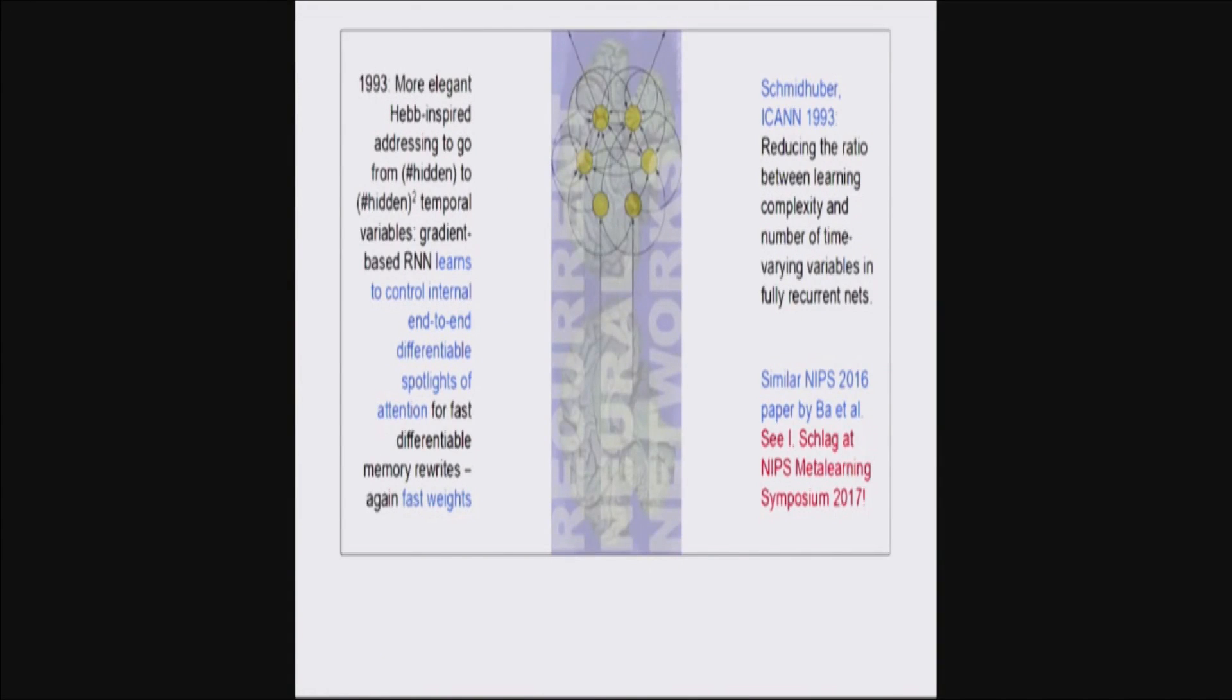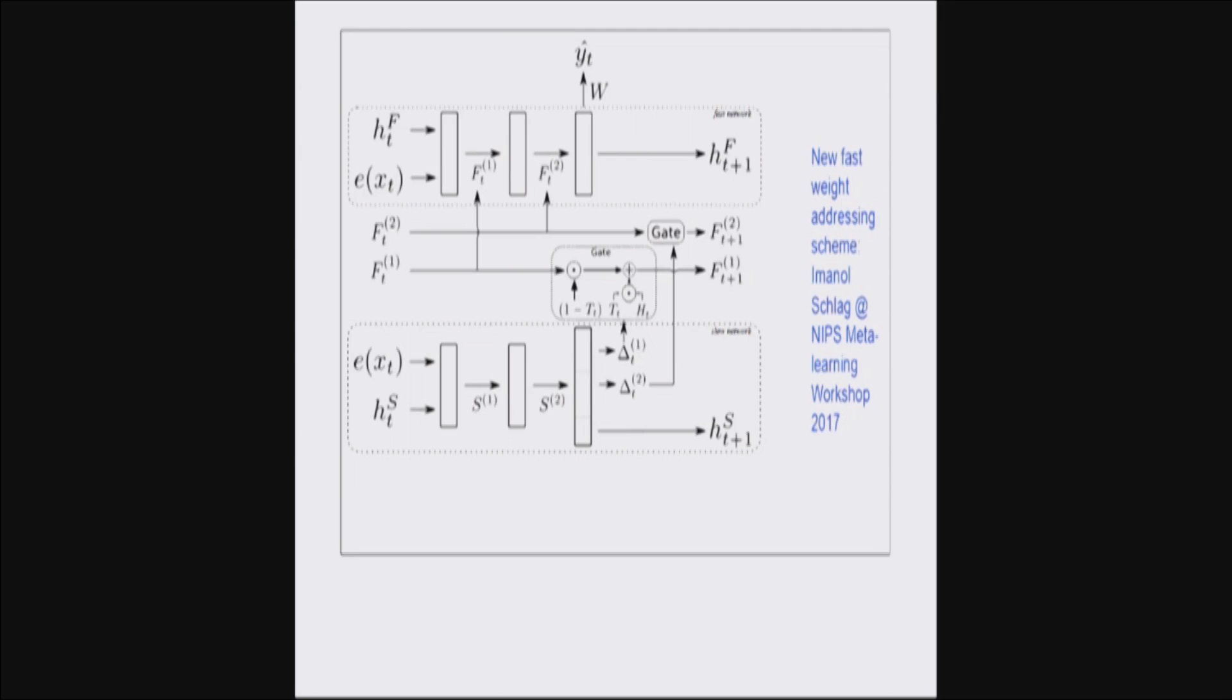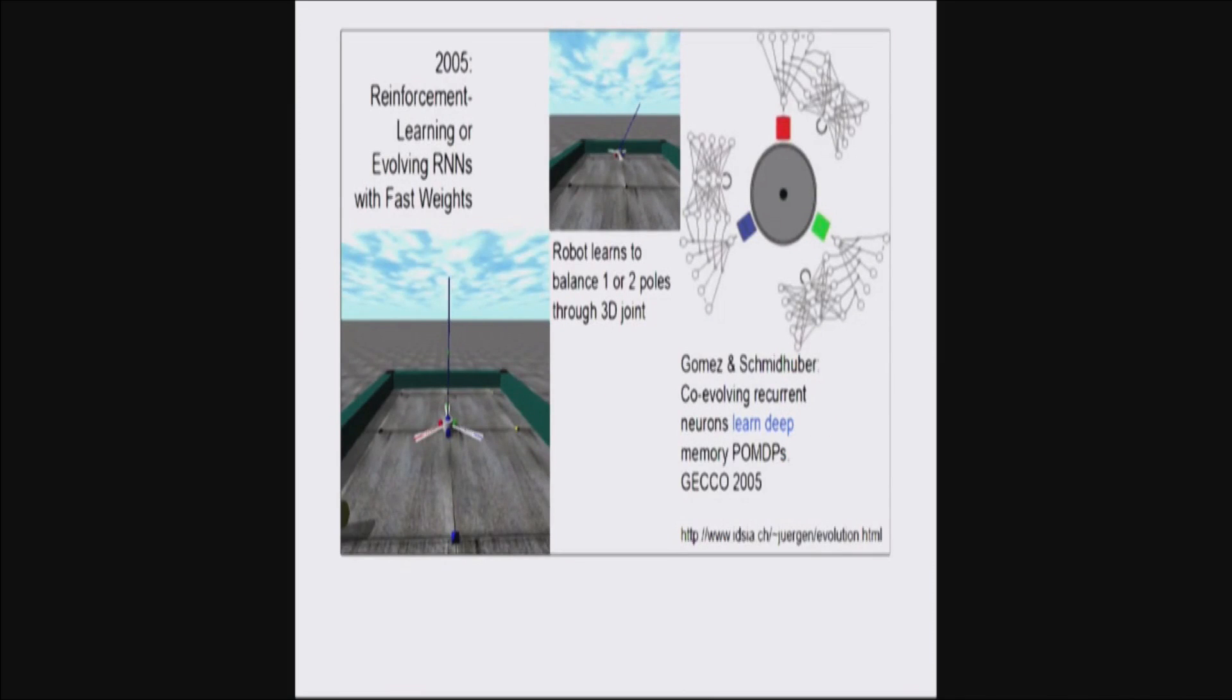A similar paper was there last year at NIPS 2016. And there is one here tomorrow, I think, at the NIPS meta-learning workshop, and it's by Immanuel Schlag, my PhD student. He has a more complicated fast weight system, which is more practical in certain senses, and you might want to check that out.